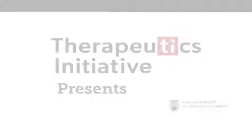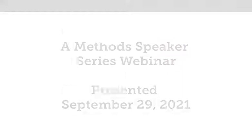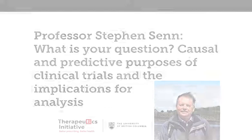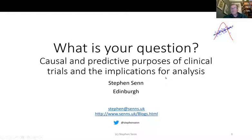I'm Stephen Sen. I'm a consultant statistician based in Edinburgh. I've been an academic but also worked in the pharmaceutical industry as a statistician. So I've had a varied career and I'm particularly interested in clinical trials. My talk is: 'What is your question? Causal and predictive purposes of clinical trials and the implications for analysis.'